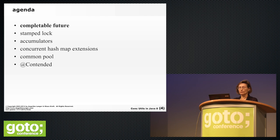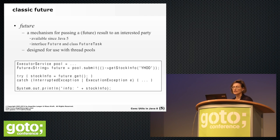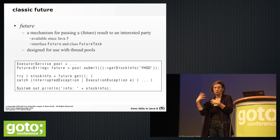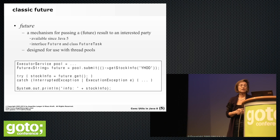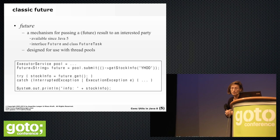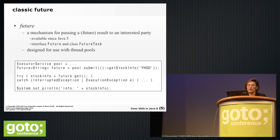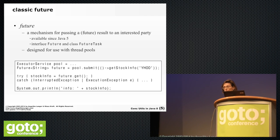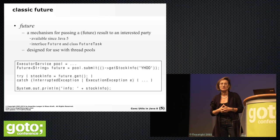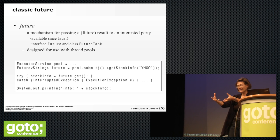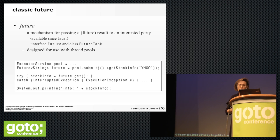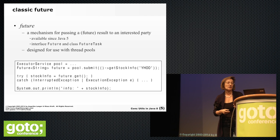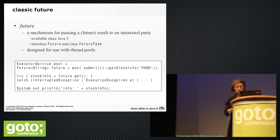Let's start with CompletableFuture. Future, in general, is a mechanism for passing a result produced by a concurrently running task to an interested party — another thread, typically. It was initially added in Java 5. The central operation is getting the result, and FutureTask is the implementing class that was added in Java 5.